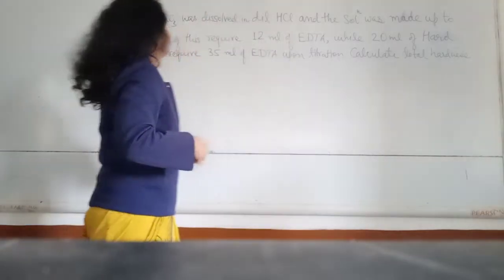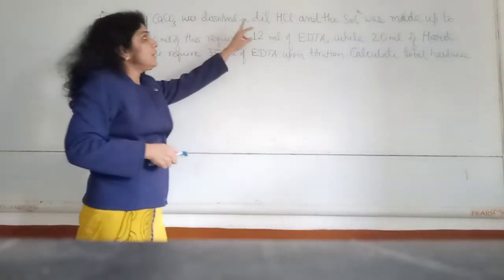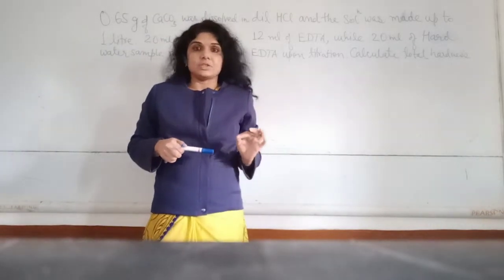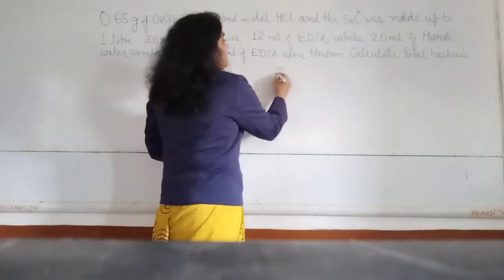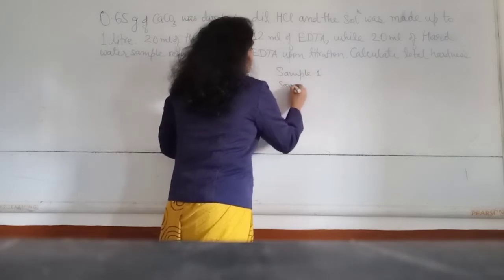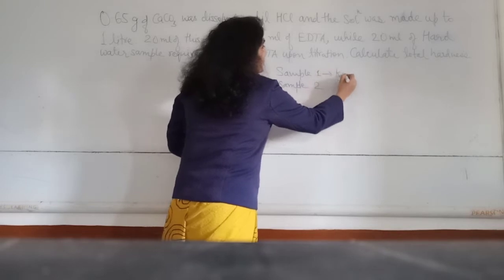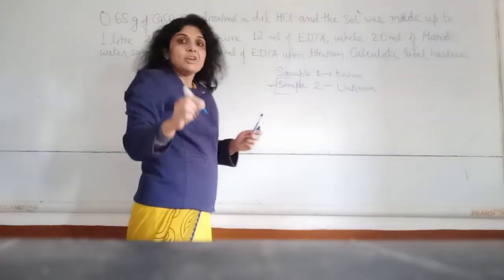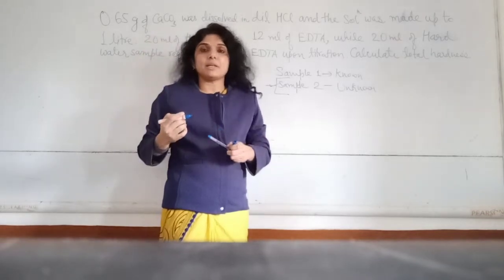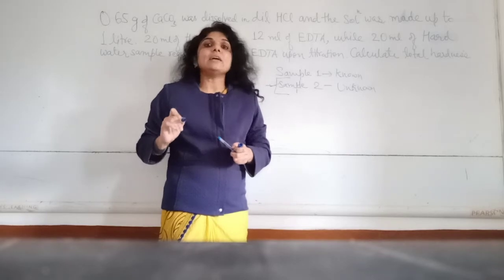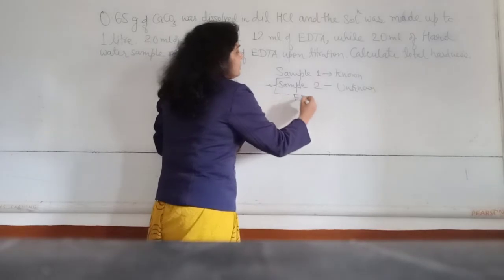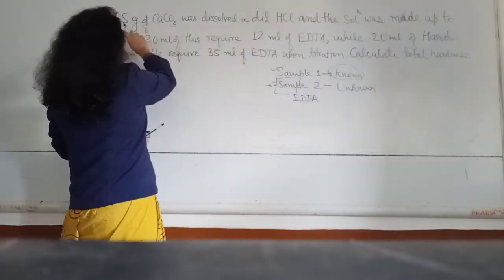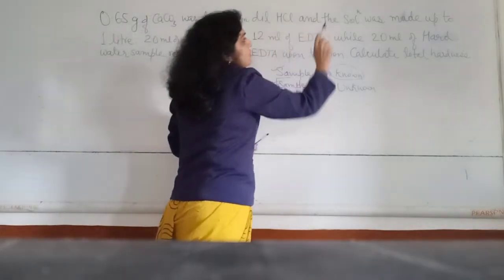The numerical I have written here: 0.6 gram of CaCO3 was dissolved in dilute HCl and the solution was made up to 1 liter. For this you should know the process of EDTA titration. We have two samples — Sample 1 and Sample 2. Sample 1 is known, Sample 2 is unknown. We will find hardness with the help of EDTA titration, and EDTA is our intermediate reagent.